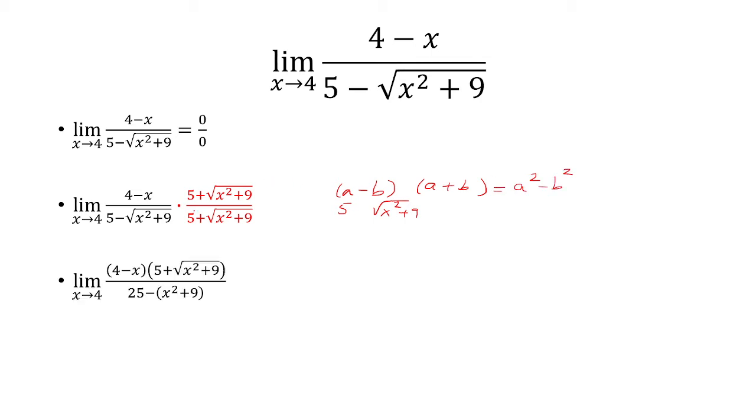So the denominator, you're squaring 5, which becomes 25. Then you're subtracting it with the square root of x squared plus 9 squared, which means the square root cancels. And you want to make sure that you put parentheses over what's inside the square root.